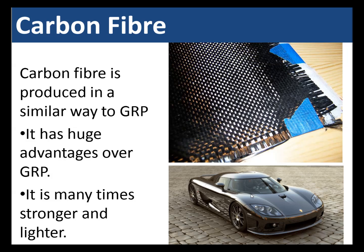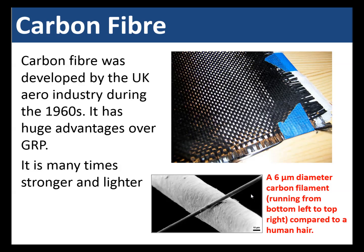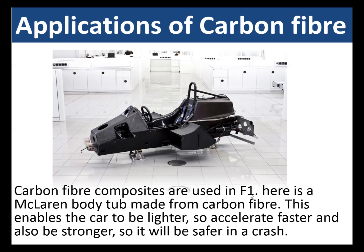Carbon fiber is produced in a similar way to GRP but has a huge advantage over GRP — it is many times stronger and lighter. Carbon fiber was developed by the UK aerospace industry in the 1960s. It consists of very fine carbon filaments and an epoxy-type resin. Often it has to be cured or baked in an oven, which is an additional process compared to GRP manufacturing.